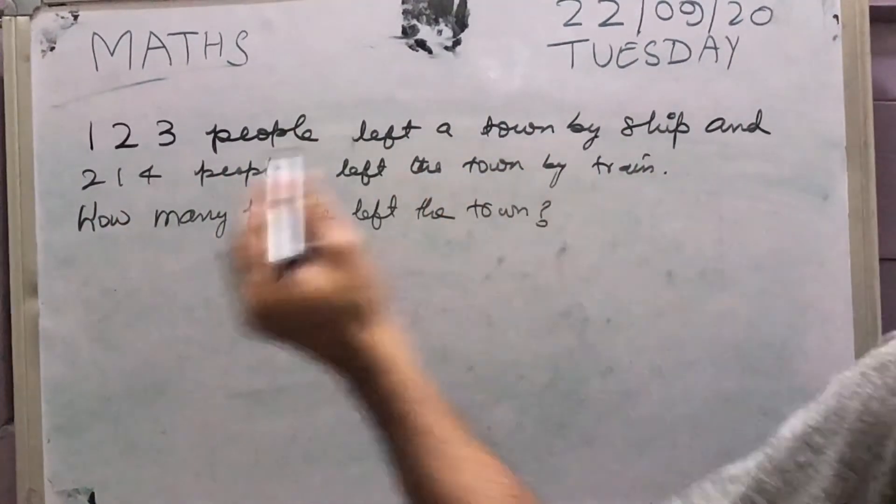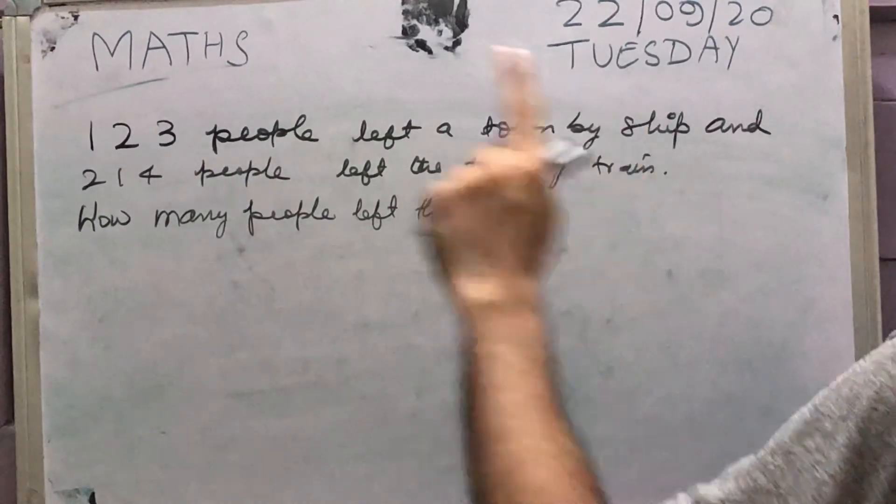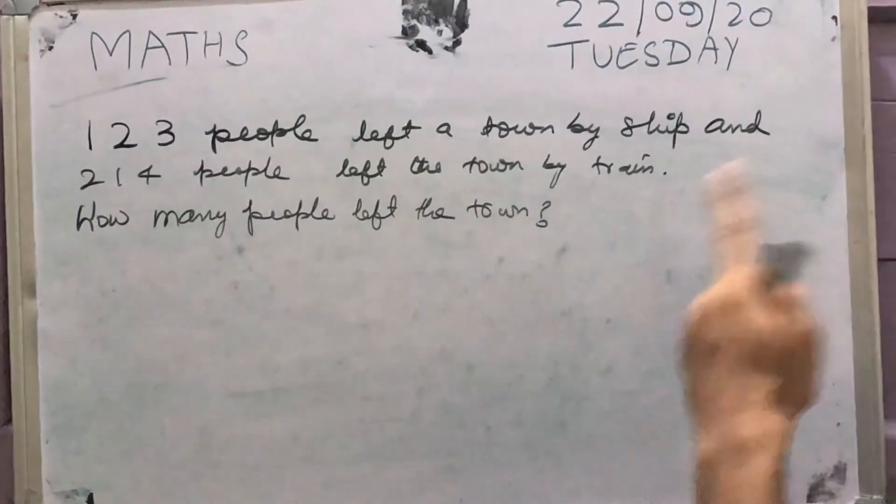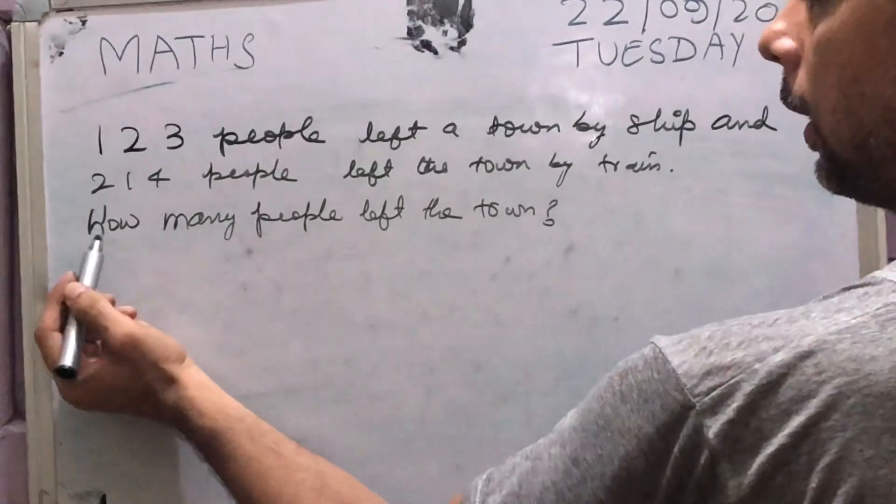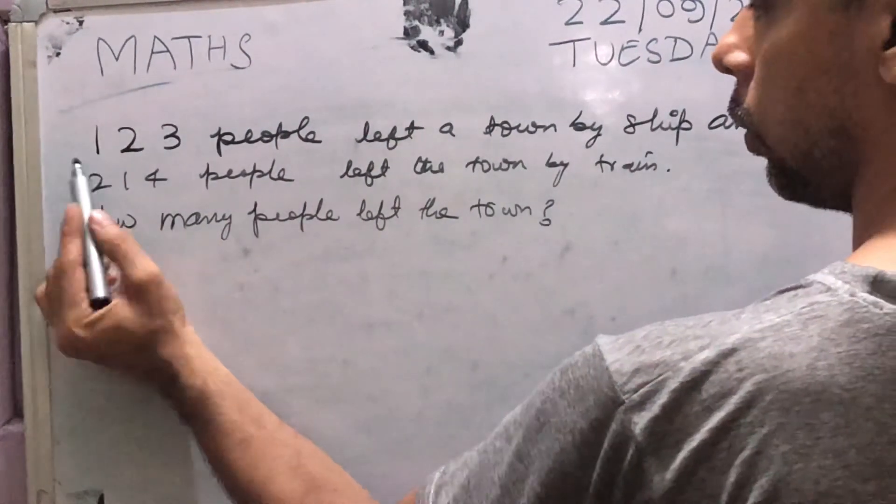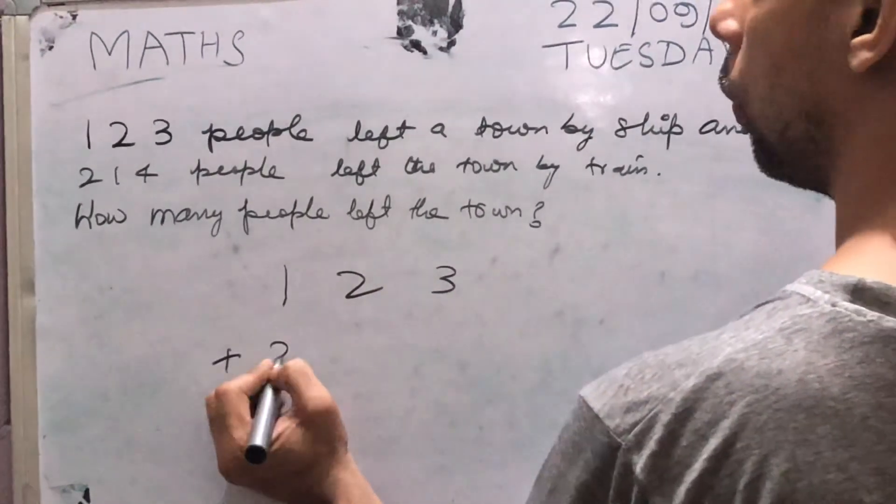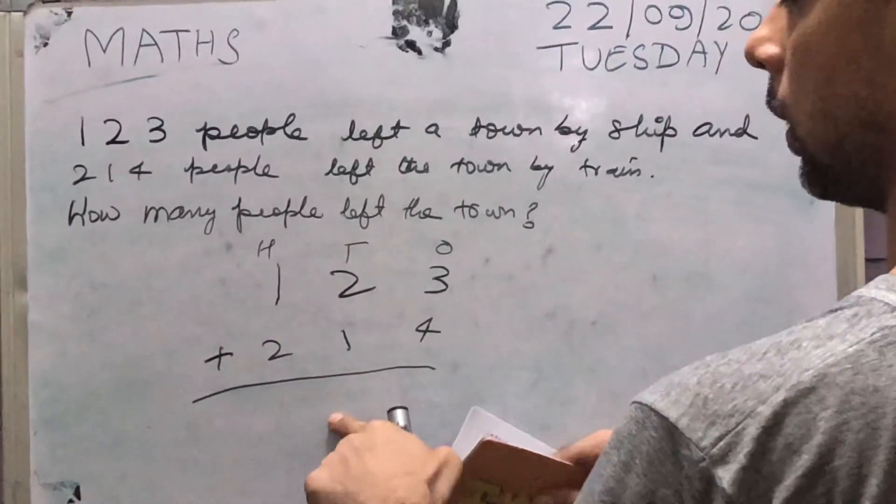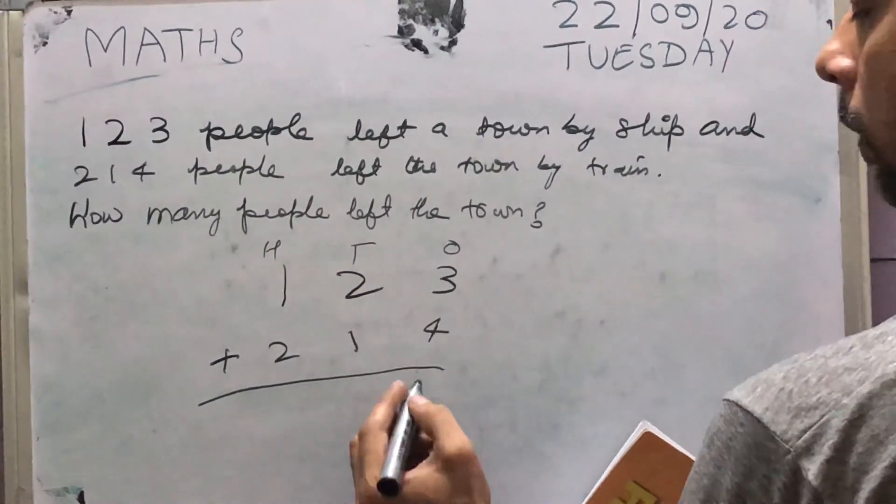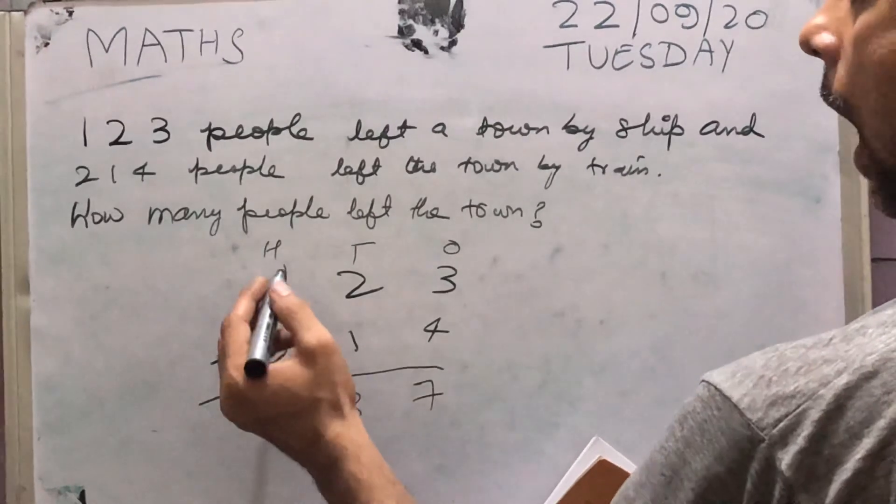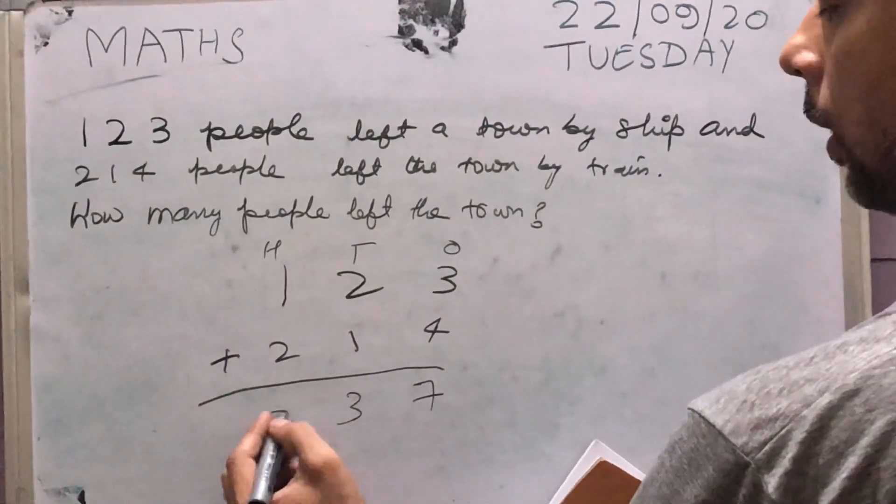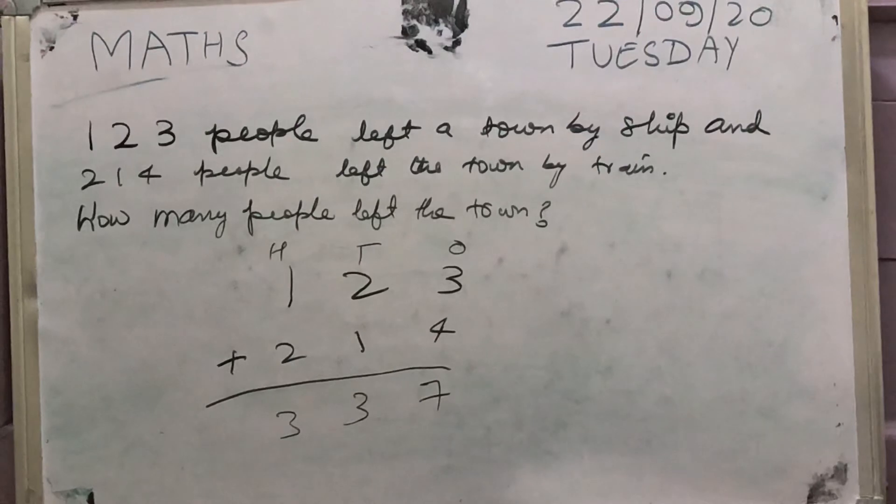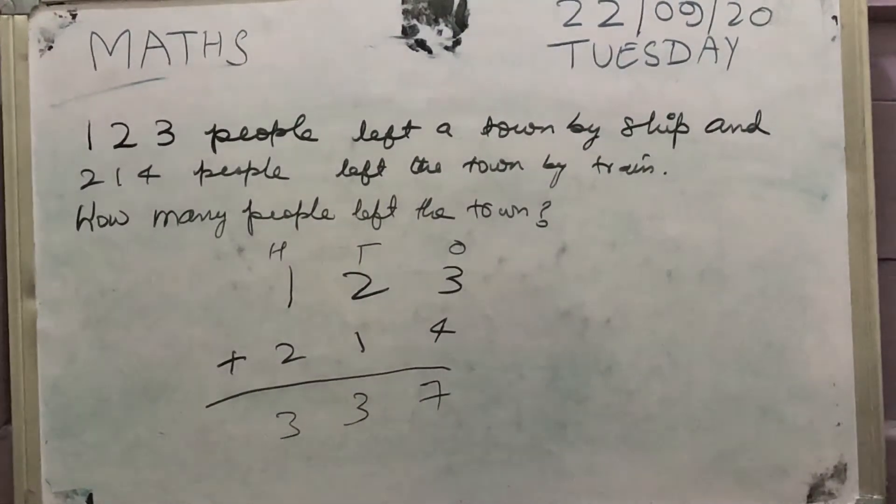123 people left the town by ship and 214 people left the town by train. So you can see from this example it is nothing but the addition of these two numbers. So we add 123 with 214. Again it's very easy, you add first ones and then you add tens and then you add hundreds. This is without carry over so it will be easy. 4 ones plus 3 ones is 7 ones, 2 tens plus 1 ten is 3 tens and 1 hundred with 2 hundreds is 3 hundreds. So answer is 337. Do exercises and let me know if you have any query in the WhatsApp group chat and we will clarify your doubt. Thank you very much.